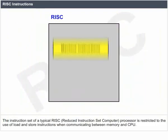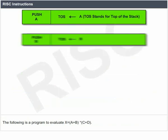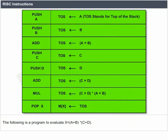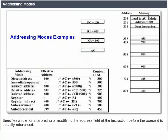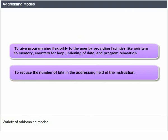RISC Instructions: The instruction set of a typical RISC (Reduced Instruction Set Computer) processor is restricted to the use of load and store instructions when communicating between memory and CPU. Addressing Modes: An addressing mode specifies a rule for interpreting or modifying the address field of an instruction before the operand is actually referenced. Addressing modes provide programming flexibility to the user by providing facilities like pointers to memory, counters for loops, indexing of data, and program relocation, as well as reducing the number of bits in the addressing field of the instruction.